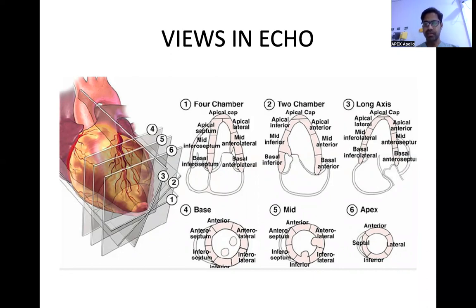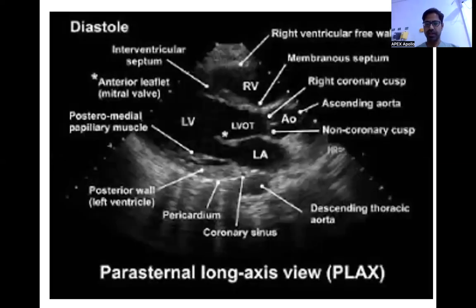Starting with the parasternal long axis view: the structures you can see are the mitral valve, aortic valve, left ventricular outflow tract, and left ventricle, along with left ventricular function. The four-chamber view is specifically to see the left ventricle and partly the right ventricle. In the parasternal short axis there are three positions — apical, mid-ventricular, and basal. At the mid papillary level you can evaluate LV function, regional wall motion abnormality, and if right ventricular pressure is high you may see a D-shaped left ventricle rather than the normal round shape.